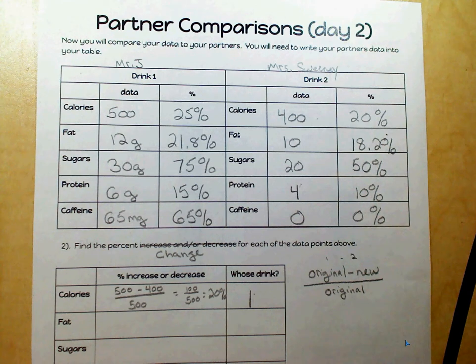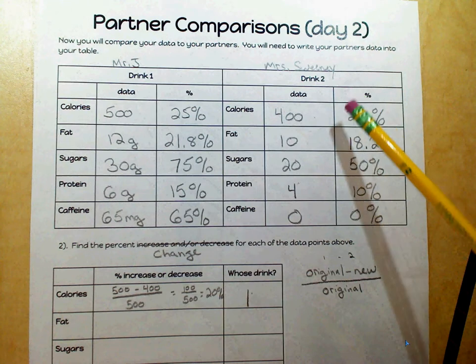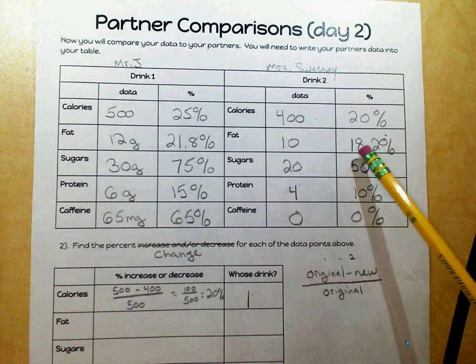Now, what you're going to be doing is you're going to be comparing your drink in drink one to your partner's drink in drink two. You need to fill in their information for each percentage.